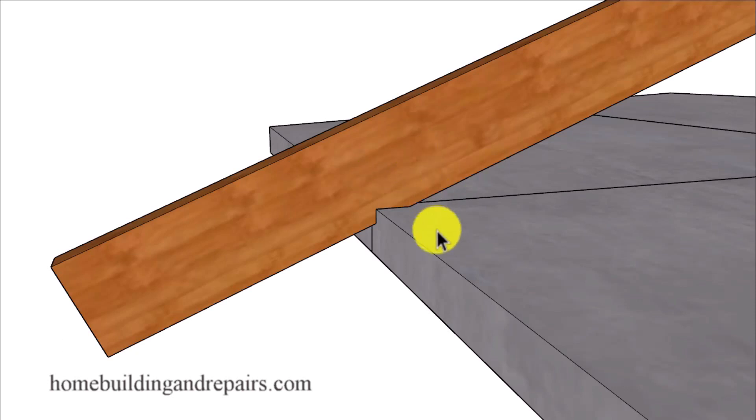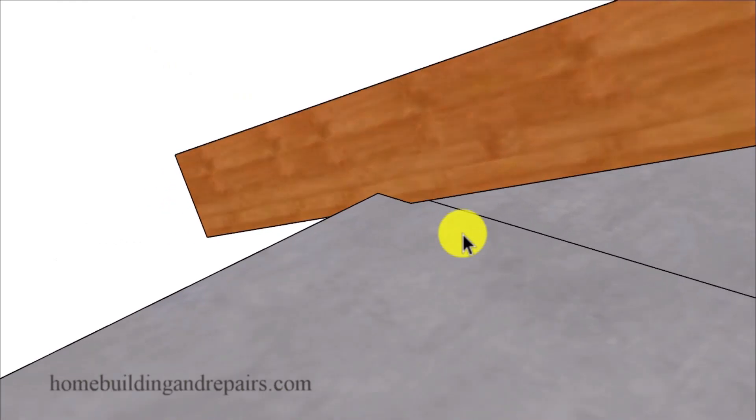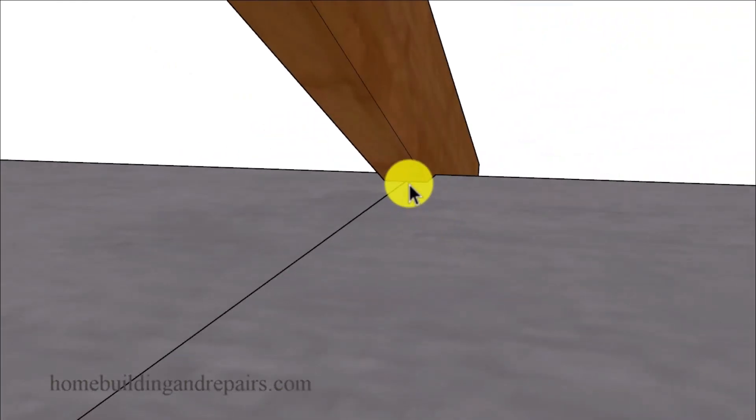Now I have the rafters sitting on top of the concrete slab. The rafters will be in the same position sitting on top of the framed walls. And instead of showing the walls I figured it would be better to use the measurements on the concrete slab to show you the position of the roof rafters.